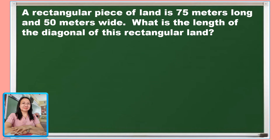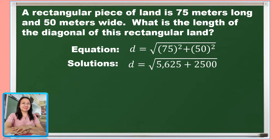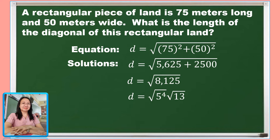Let us continue. Copying our equation, D equals the square root of 75 squared plus 50 squared. The square of 75 is 5,625 added to the square of 50, which is 2,500. The sum of 5,625 and 2,500 is 8,125. Using prime factorization, the square root of 8,125 equals the square root of 5 to the 4th power times the square root of 13. The square root of 5 to the 4th is 5 squared, and 5 squared is 25, so we get 25 square root of 13.